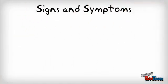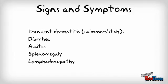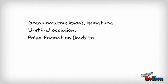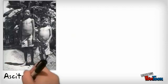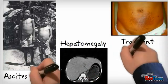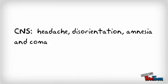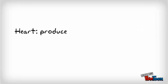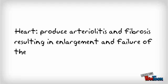Signs and symptoms include transient dermatitis (also known as swimmer's itch), diarrhea, ascites, splenomegaly, lymphadenopathy, and granulomatous lesions leading to hematuria, urethral occlusion, and polyp formation, which can lead to dysentery. For the CNS, symptoms include headaches, disorientation, amnesia, and coma. For the heart, arteriolitis and fibrosis can result in enlargement and failure of the right ventricle.